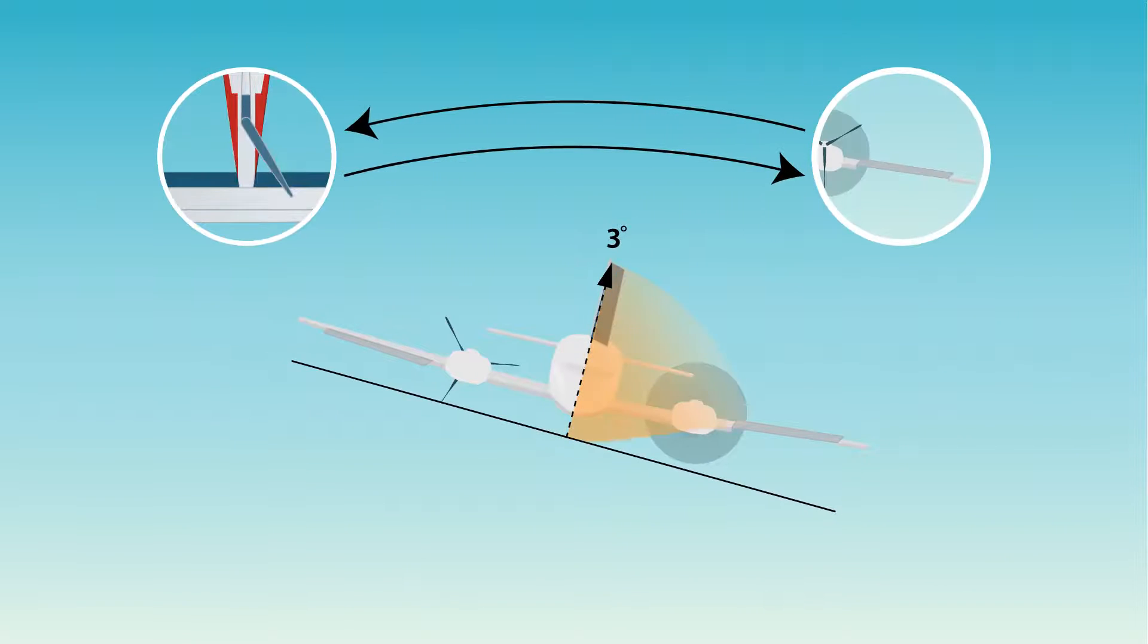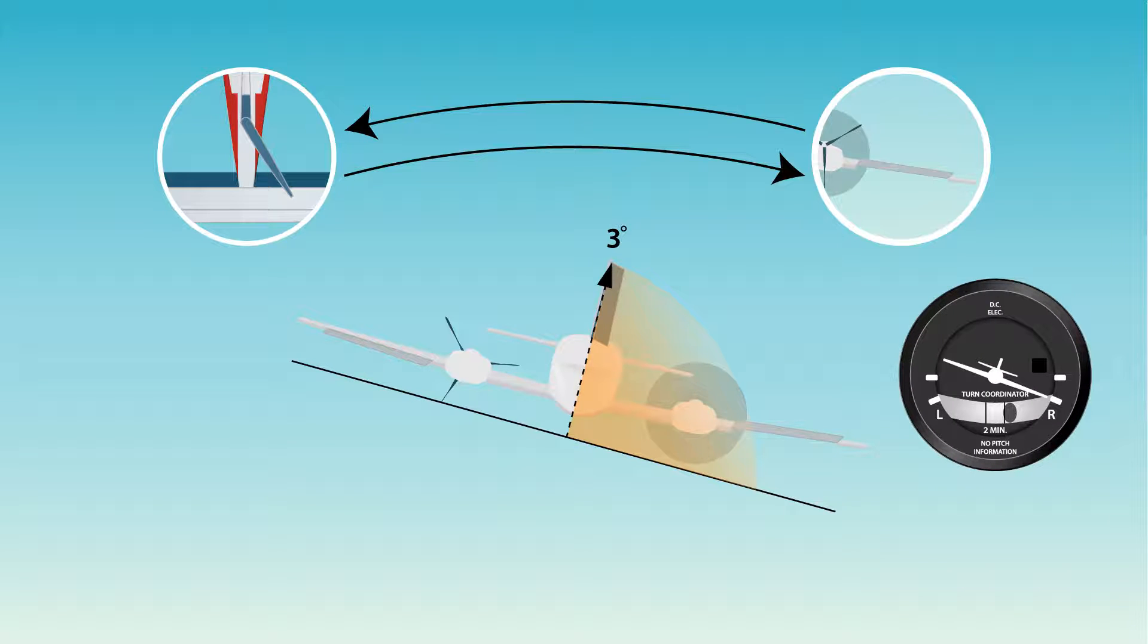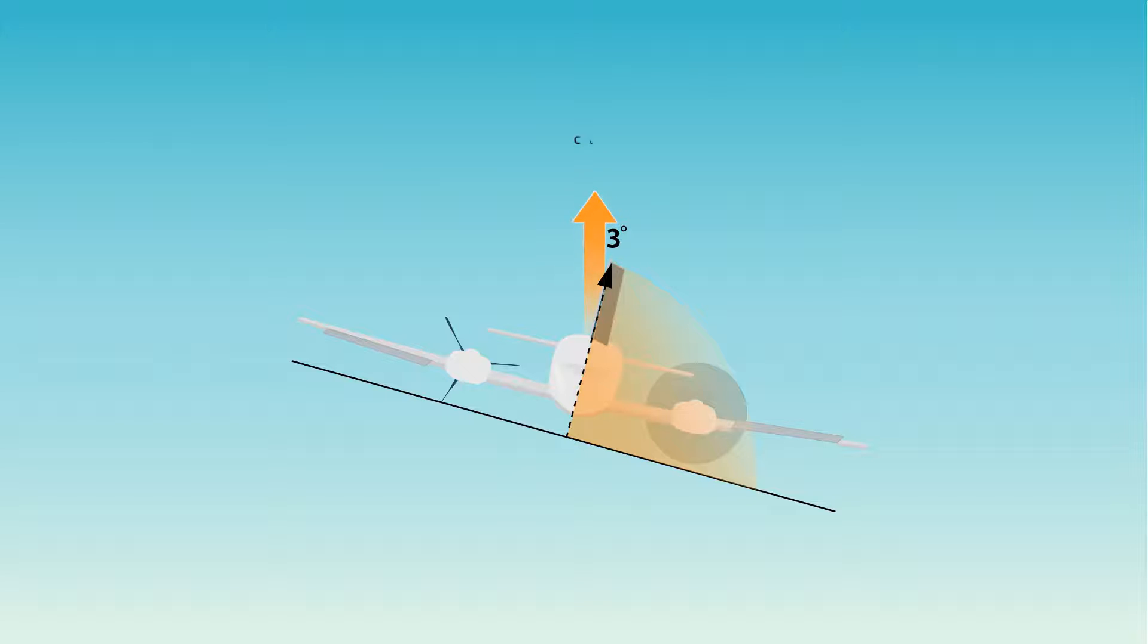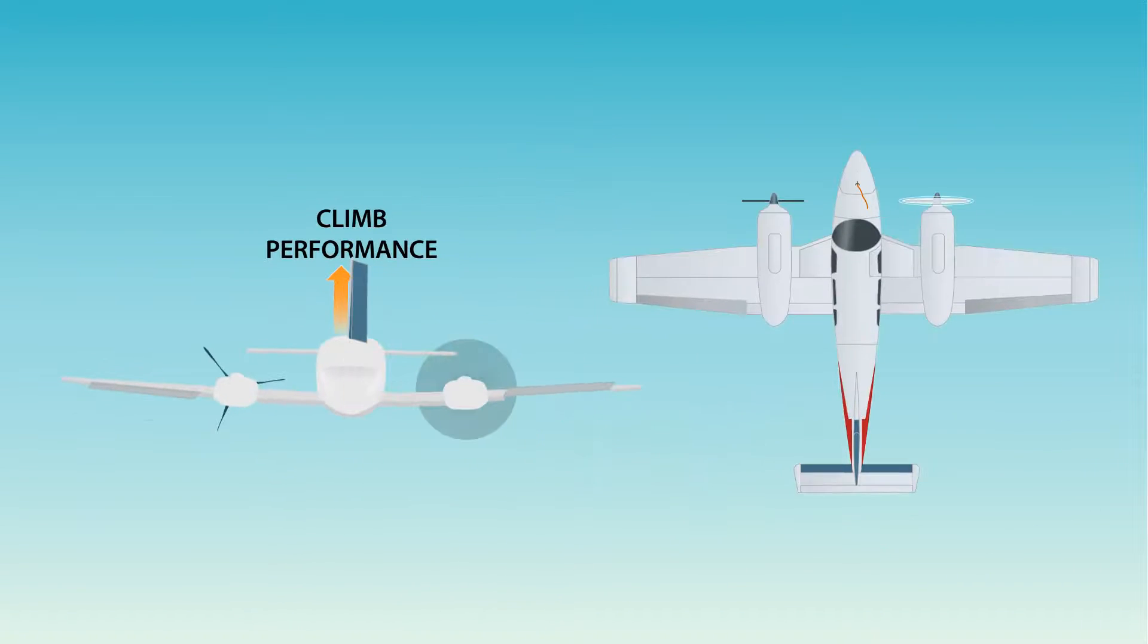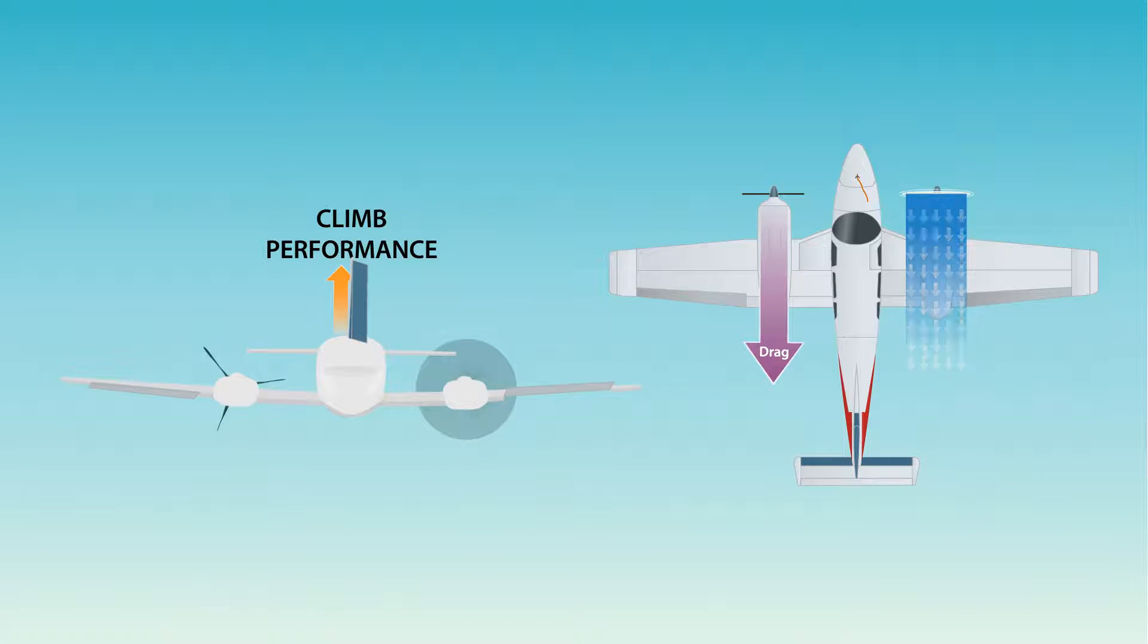Rudder and ailerons used together in the proper combination result in a bank of approximately two to three degrees towards the operative engine. The ball is displaced approximately one-third to one-half toward the operative engine. This results in zero sideslip and maximum climb performance. Any attitude other than zero sideslip increases drag and decreases performance.